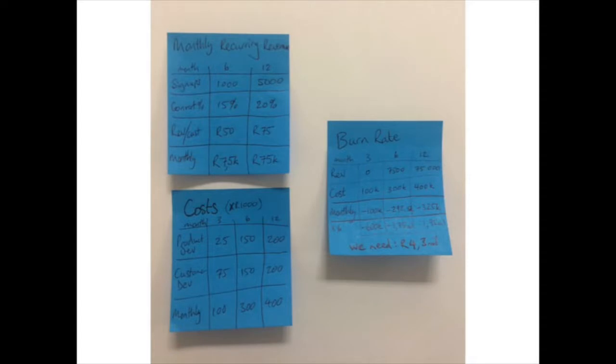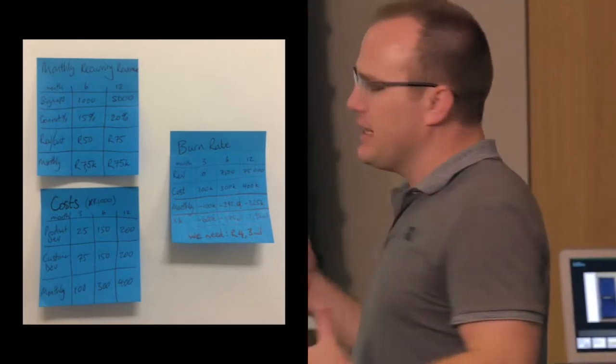When we say post-it financials, we really mean post-it financials. Take post-it notes and put three of them down: one on money in, one on money out, and one on the balance. That's the idea around it.